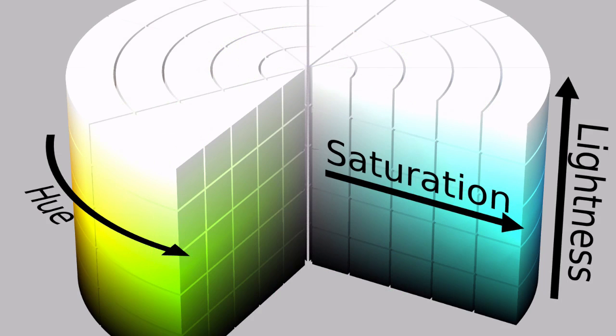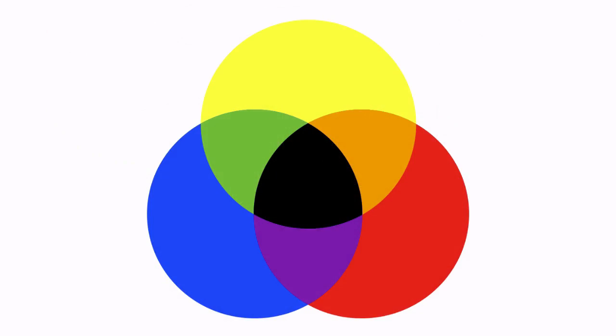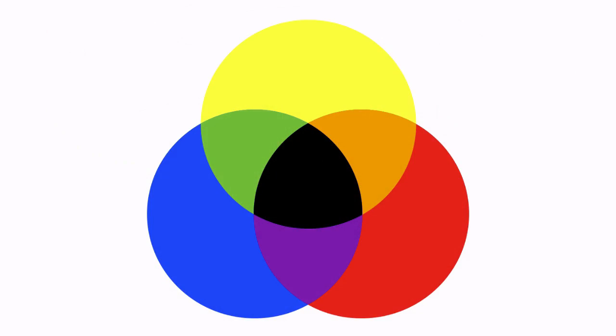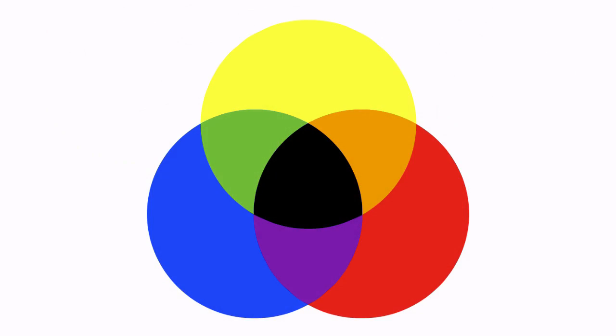Then we'll take a look at the different ways Photoshop handles colors — that's the color modes. We'll talk about what they are and the advantages and drawbacks of each of them.